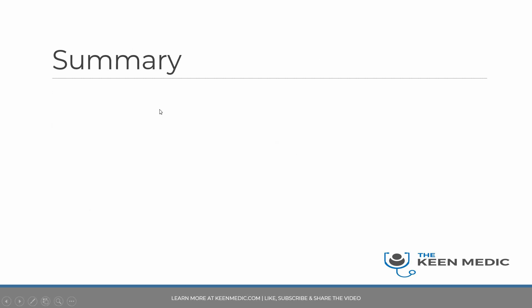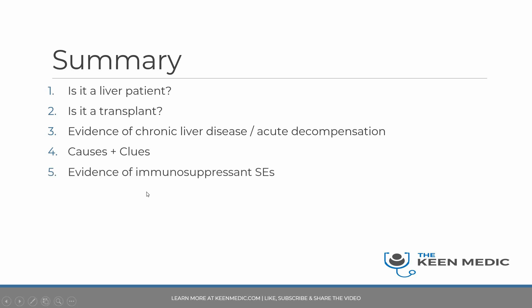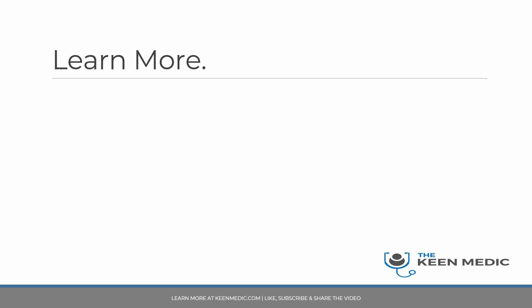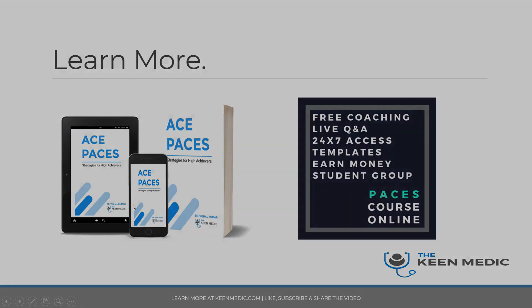Let's go through a summary of what we've covered today. First, identify if it is a liver patient by looking for a scar, then determine if it is a transplant or not. Identify evidence of chronic liver disease or acute decompensation. Look for causes and clues of liver disease, then think about immunosuppressants and their side effects — linked in the renal video. Finally, think about relevant investigations and management, and present to the examiners. Check out the book on Amazon and my course, both linked in the description below. I'll see you in the next video.